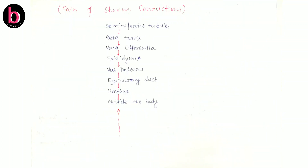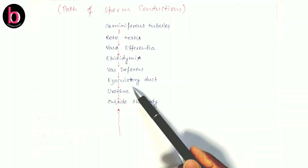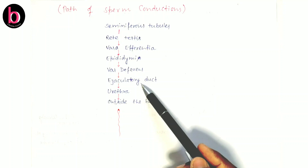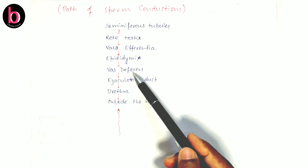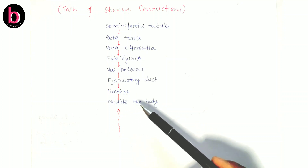The penis conducts both semen and urine, but only one at a time — they are never conducted simultaneously. To summarize the path of sperm: sperm are synthesized in seminiferous tubules inside testicular lobules, then move through rete testis, vas efferentia, epididymis, vas deferens, ejaculatory duct (the junction of vas deferens and seminal vesicle), then into the urethra, and finally pass out of the body.